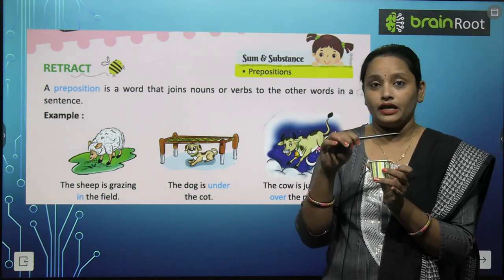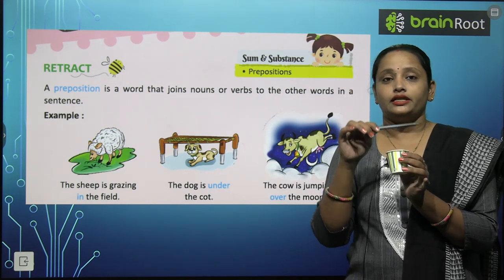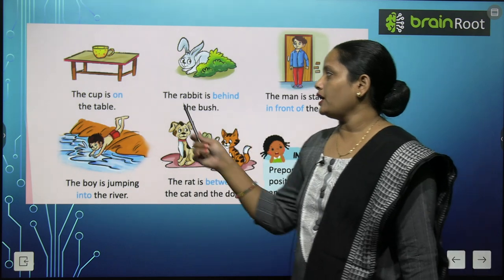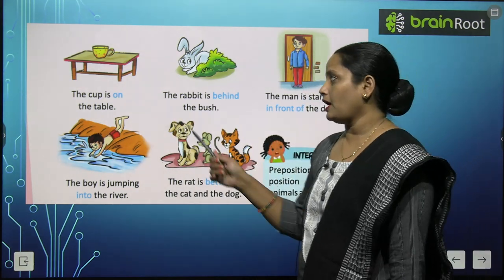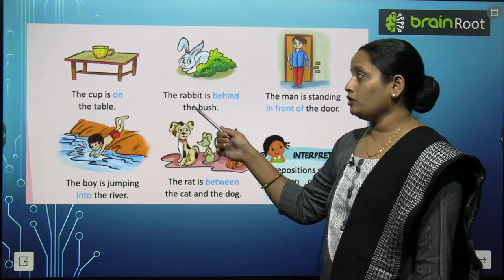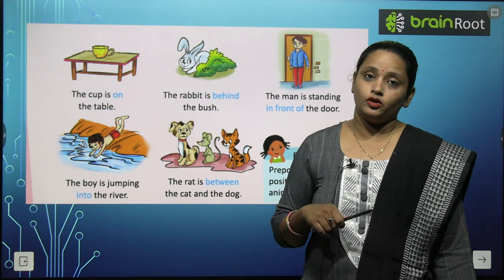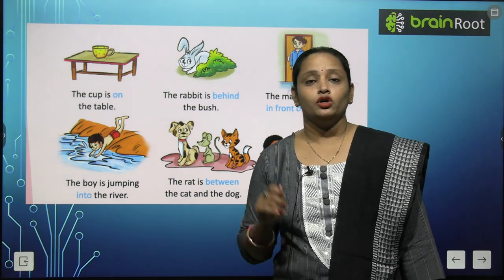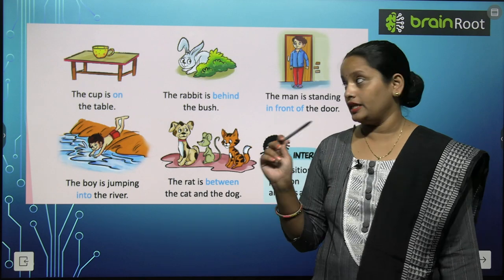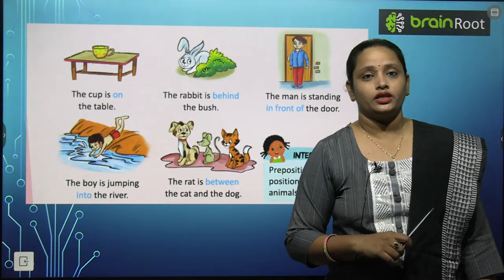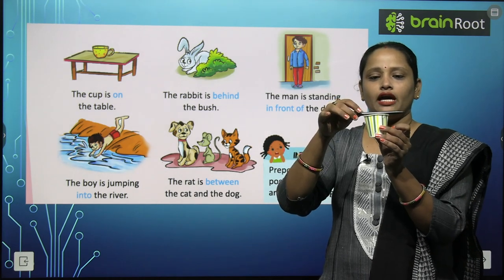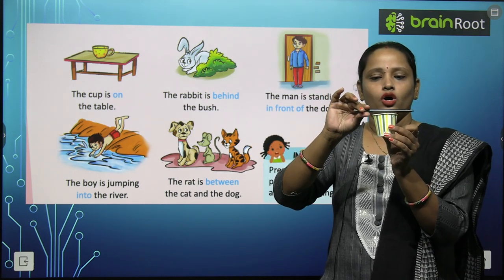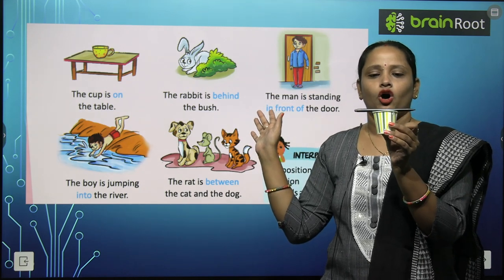Cup ko touch nahi kiya hai pen ne, toh 'over' means upar but it should not touch the object. Next, the cup is on the table — cup table pe hai, toh 'on' means upar. Abhi humne padha tha 'over' ka matlab bhi upar, aur 'on' ka matlab bhi upar. But over mein object ko cheez touch nahi karayi, lekin 'on' mein dono objects ek doosare ko touch kar rahe hain. So 'on' means dono objects ek doosare ko touch kar rahe hain.